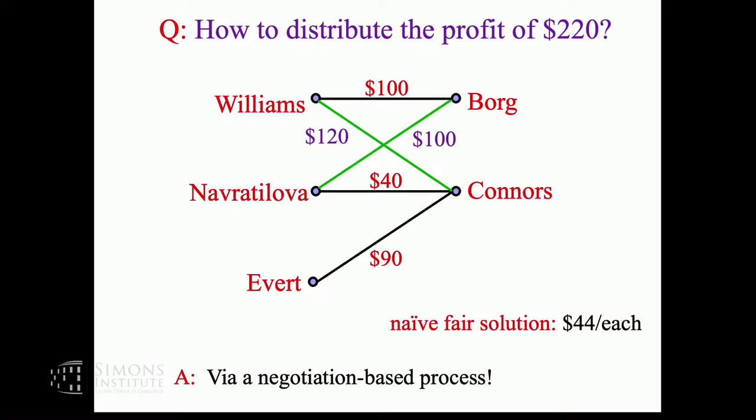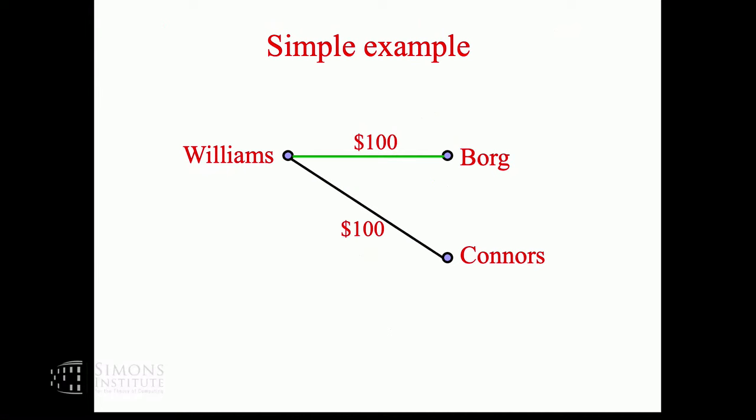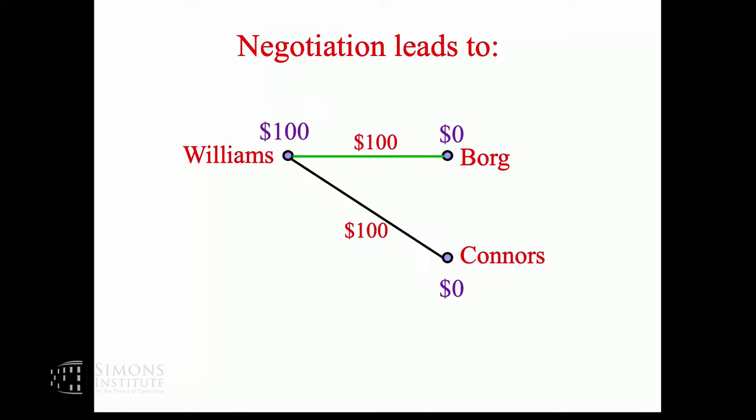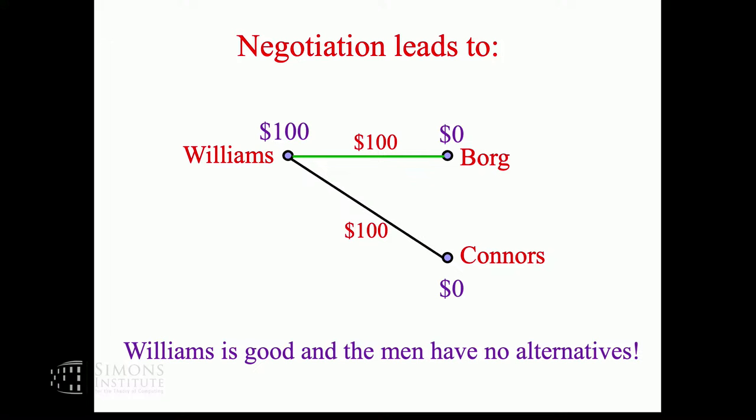We are going to use a negotiation based process because these are probably the most competitive people on this planet. Each of them thinks they are the best player ever and should get the entire profit, so they should fight it out. Here we have two possible teams and $100 can be made. Let's say we enter the green team between Serena and Bjorn Borg. Borg says he was by far the best player in the era of wooden rackets. Serena says if you're not happy with zero dollars, go sit on the sideline and Jimmy Connors will come and play with me.